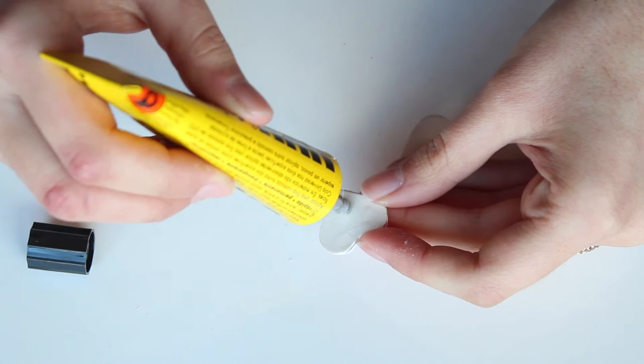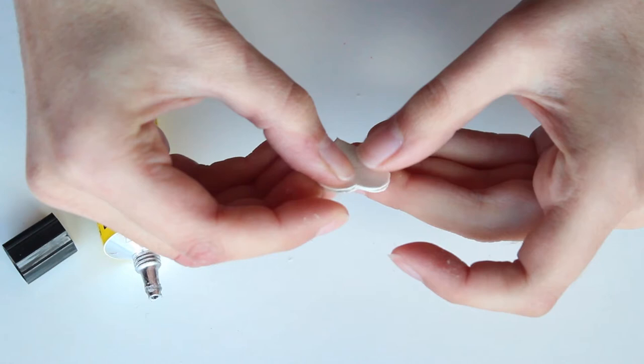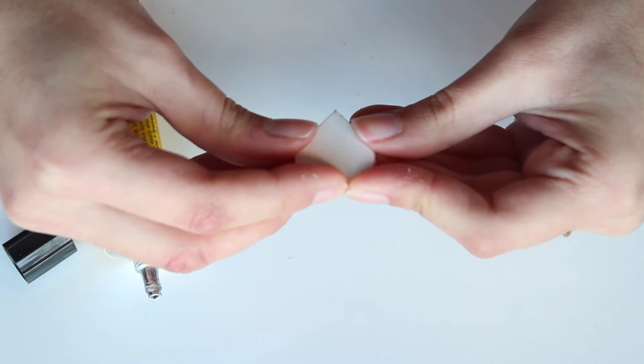Do not put too much glue, otherwise it will end up on your fingers like I did on my first pendant and it's a huge mess. Make sure all the sides are even and trim some excess if you need to.